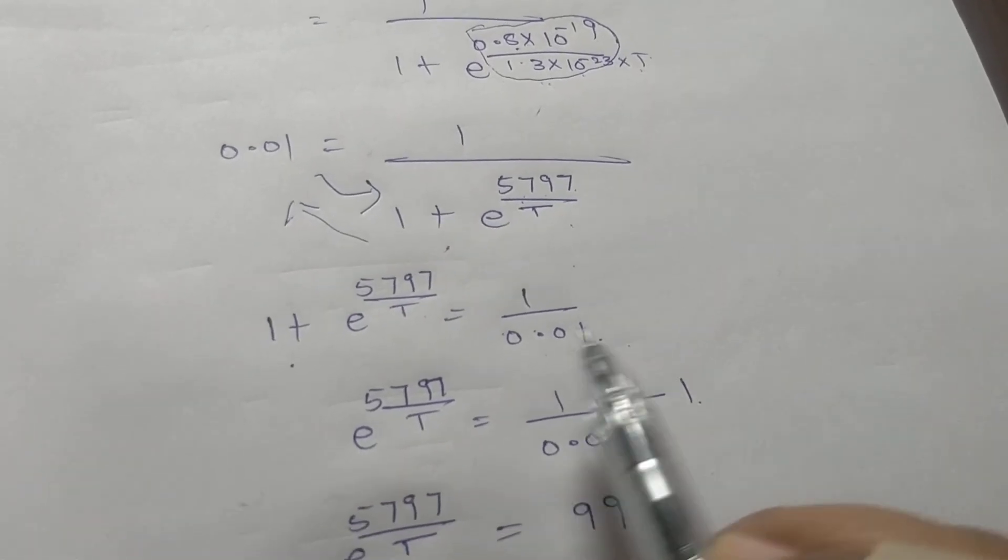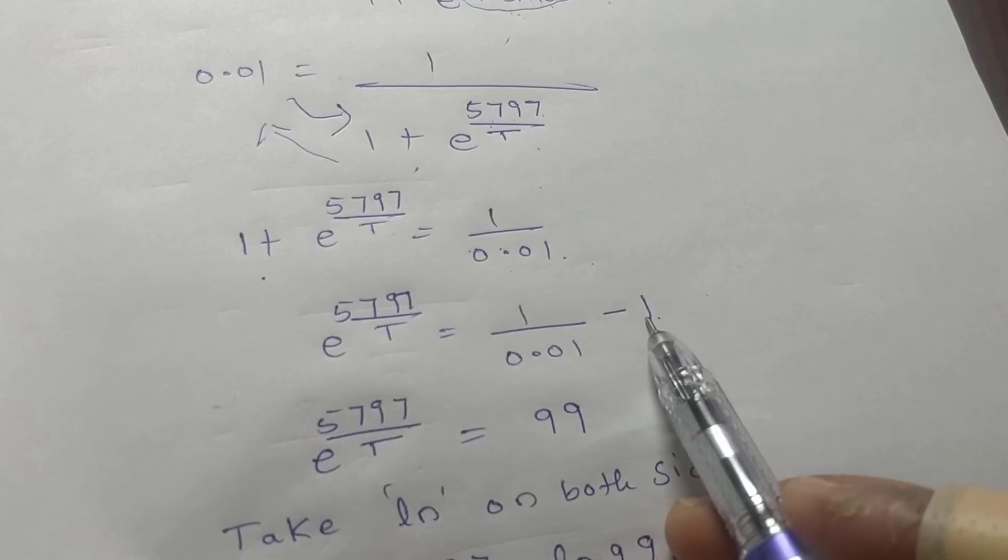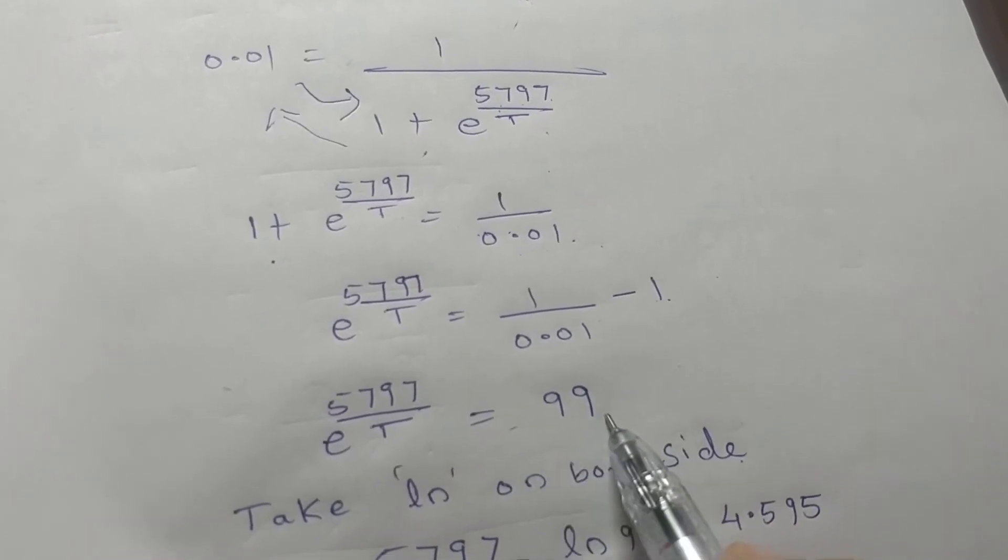Okay, take this one value here, it will become minus 1. So the value will be 99. It is e to the power, so what you have to take? Take ln on both sides.